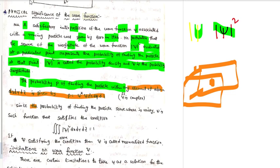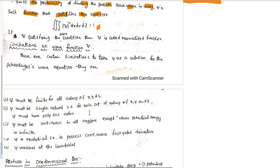The probability of finding the particle somewhere is unity, meaning the wave function must satisfy the normalization condition integrated over all space.